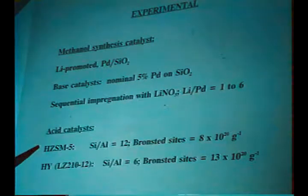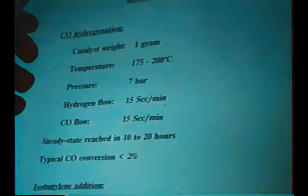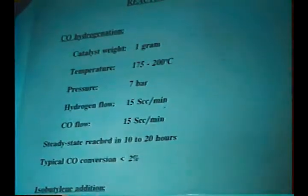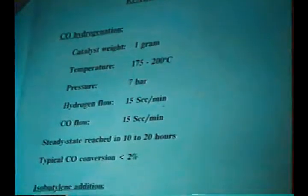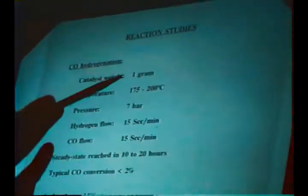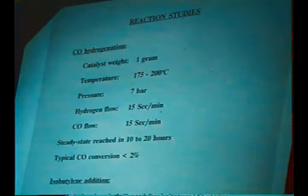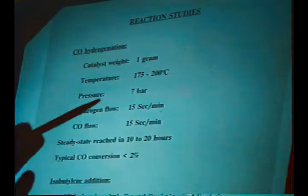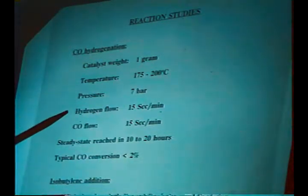Our acid catalysts: we picked two zeolites. One is HZSM-5 from Mobil, and we picked HZSM-5 because HZSM-5 seems to be the magic catalyst that can do everything. And HY, with silica to aluminum ratios of 12 and 6 respectively, that correspond to 8×10²⁰ per gram Bronsted sites for the ZSM-5 and 13×10²⁰ g⁻¹ for the HY. These sites were actually measured directly.